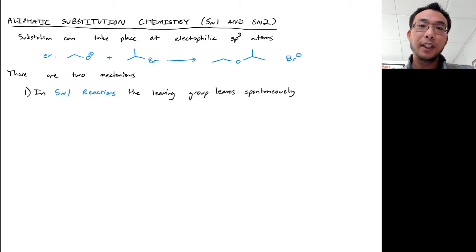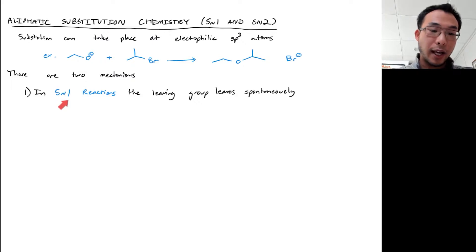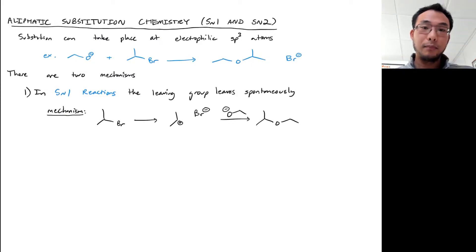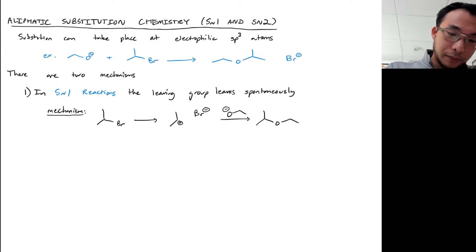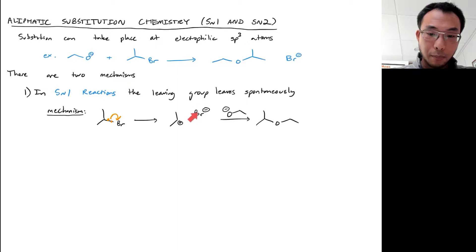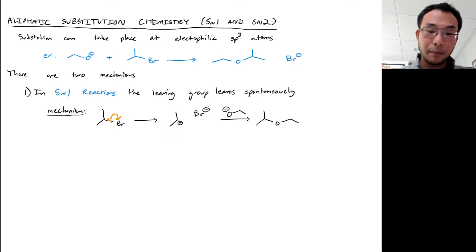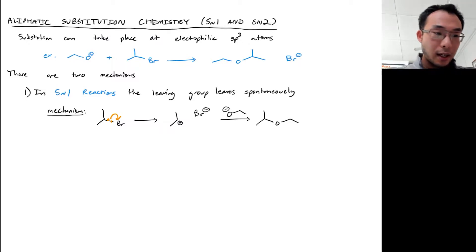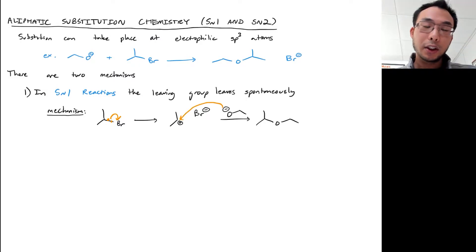In one possibility, substitution takes place by having the leaving group first leave on its own spontaneously. This is called an SN1 reaction. In the first step, the leaving group leaves first, spontaneously, giving us bromide and a carbocation intermediate. This intermediate is relatively unstable compared to the neutral molecule — we're going up an energy step. Once that intermediate is formed, nucleophilic attack on the positive charge is favorable and downhill, getting us to the product.